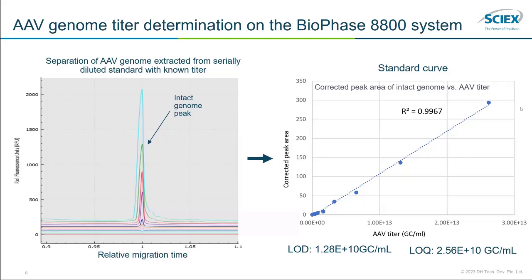What's being presented here: we have the same eight samples looking at just the intact genome peak. We have a known titer of that size standard that was then serially diluted, and we plot the corrected peak area against that titer to build our standard curve for genome titer. We get an R-squared of above 0.99 — a very linear standard curve. The LOD is just above 1 × 10^10, and you can probably push that a little bit lower as needed.